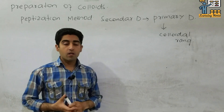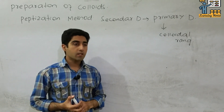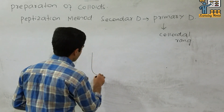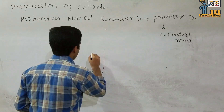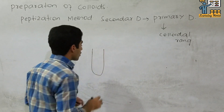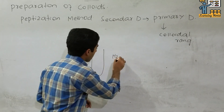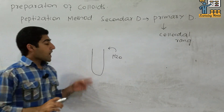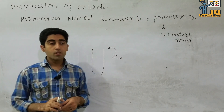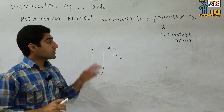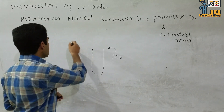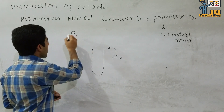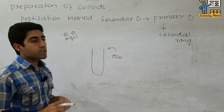We will discuss this with an example so that you can understand. First of all, we take a test tube, add some water to it, and then take a precipitate from which we want to make a colloid. We added silver chloride — the chloride has a negative charge and the silver has a positive charge.